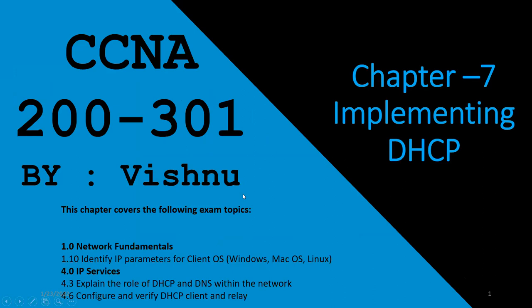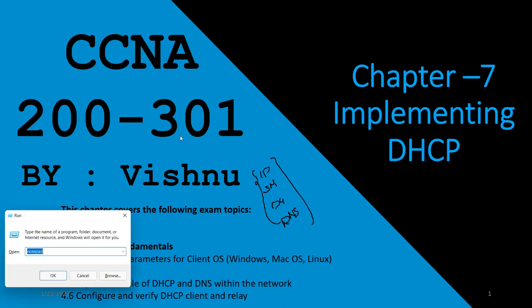DHCP expands to Dynamic Host Configuration Protocol. DHCP is used to provide IP addresses to multiple computers. If you have a single computer, it's very simple — you just log into the computer, go to Control Panel, and type the IP address, subnet mask, default gateway, and DNS information. That computer will get its IP address manually.